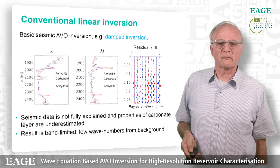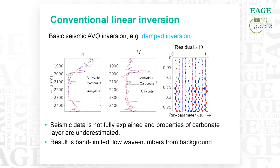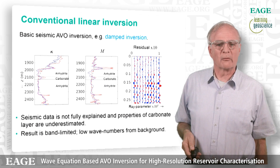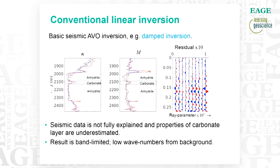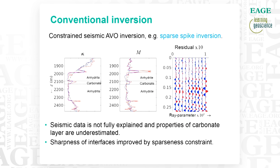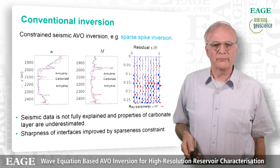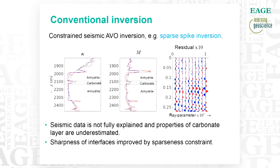The proof of the pudding is always in the eating, so we looked at inversion based on these two models. We have the same dataset — the full wave equation-based data set representative of reality — and now we apply a simple inversion based on a linear data model, even a damped inversion with no sparseness. You see the result in the wiggly line, the model in the background, and the bullet points say the data is not fully explained: the coda is not explained at all, there's still curvature that's not explained, and the result is clearly band-limited. The inversion result is wiggly and doesn't have the angularity of the real model. We can go a step further and bring in a nonlinear constraint — sparse spike inversion — and now you see that sharpness has improved, with clearly an increase in bandwidth. But the target, this carbonate layer embedded in the anhydrite, is still not fully resolved quantitatively.